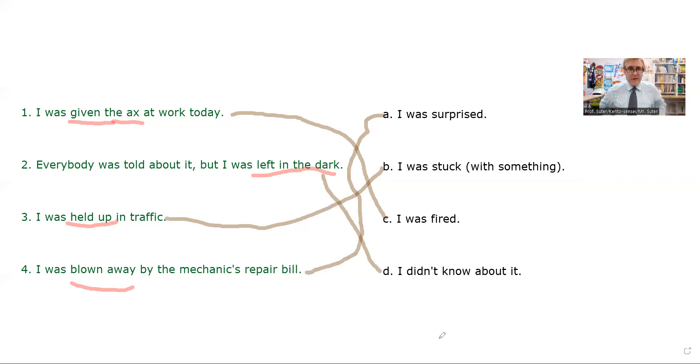As I promised, now make sure to write, take notes. The only way to learn is if you're writing them down. Given the axe means fired in American English. Left in the dark means didn't know about something. Held up means stuck at something. And blown away means surprised. Now, as I promised at the beginning, I will give you a quiz.